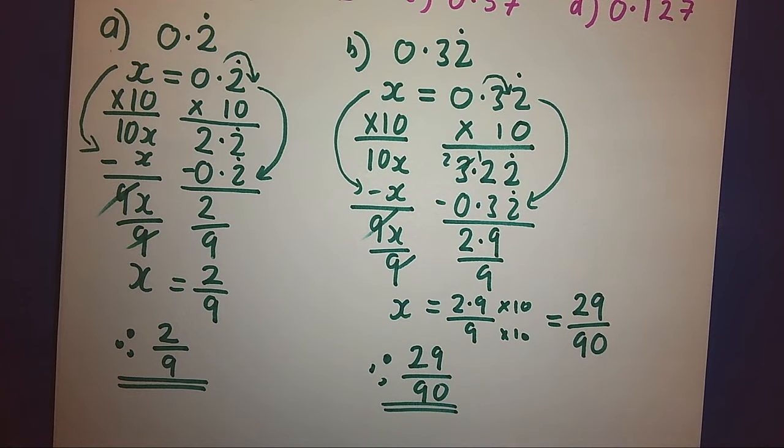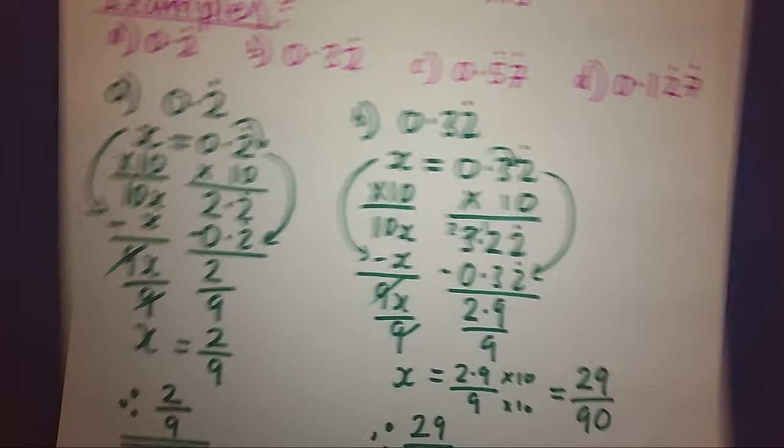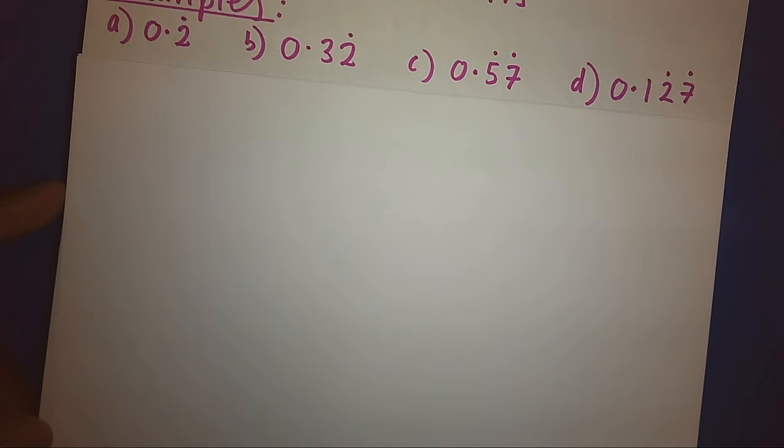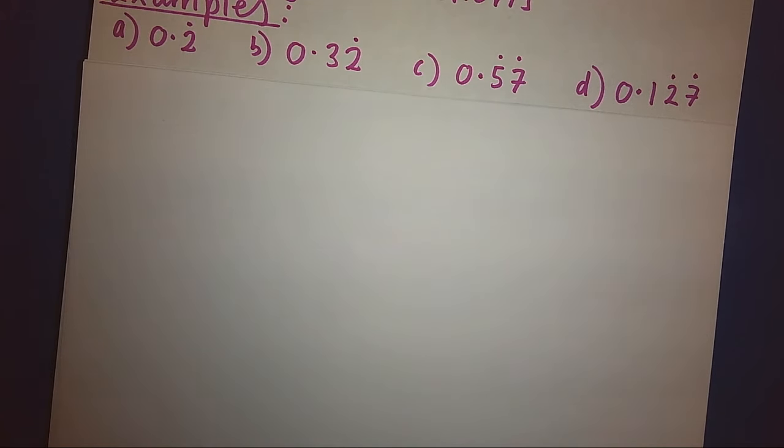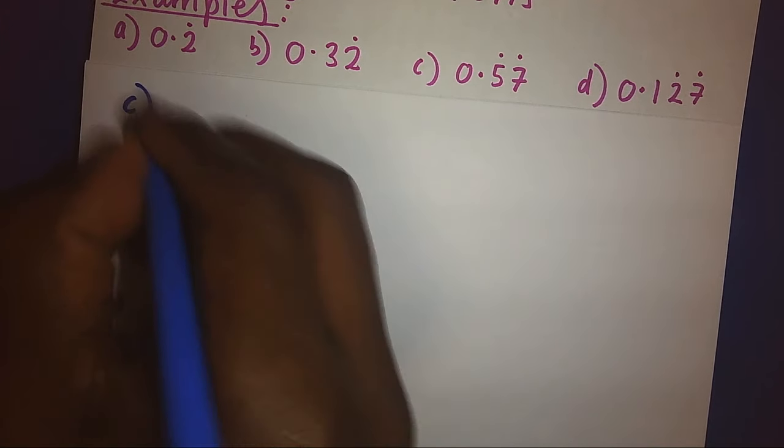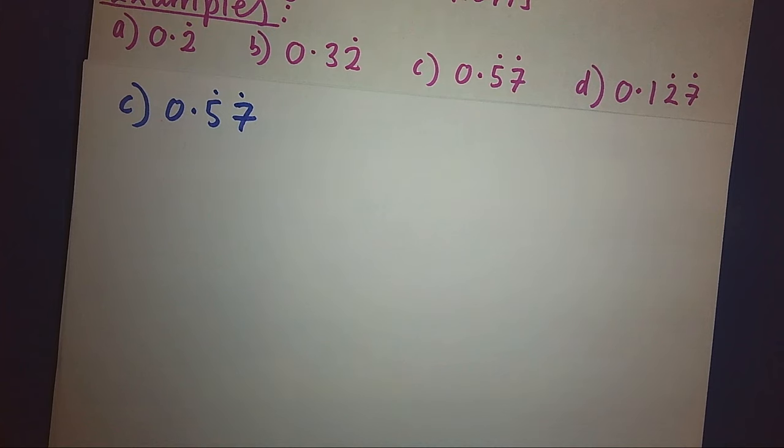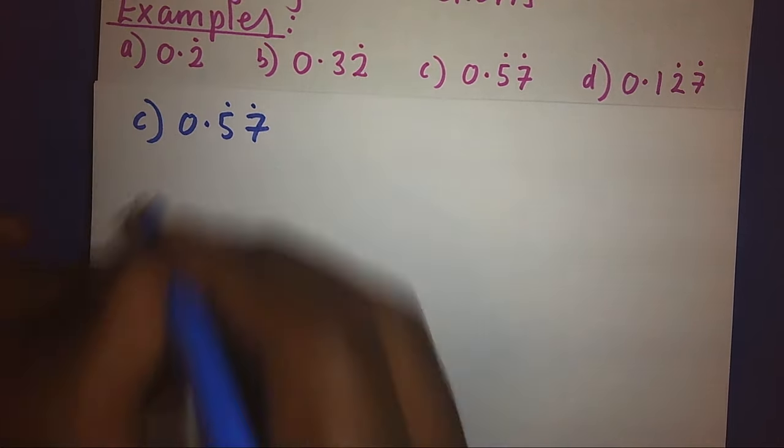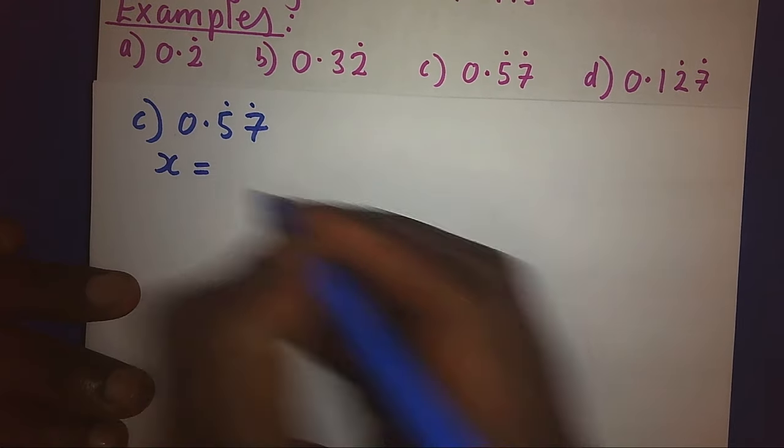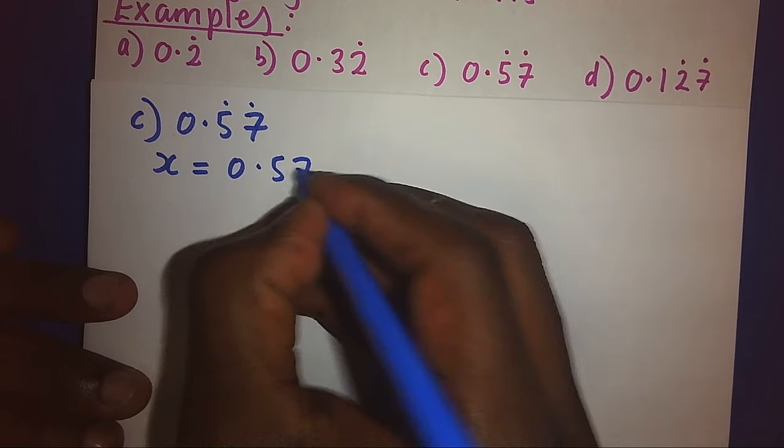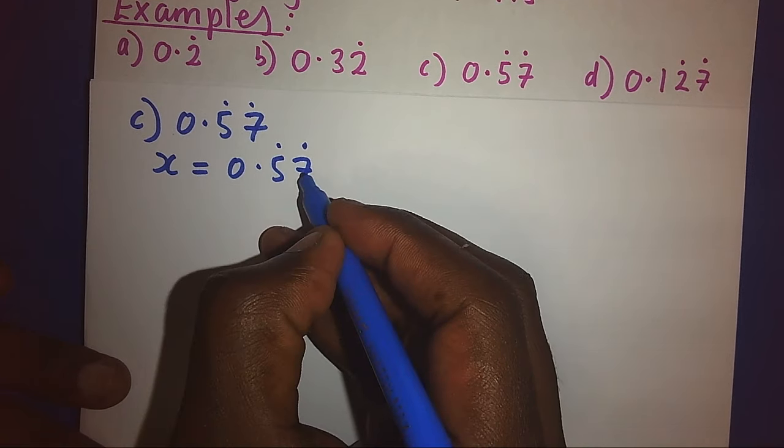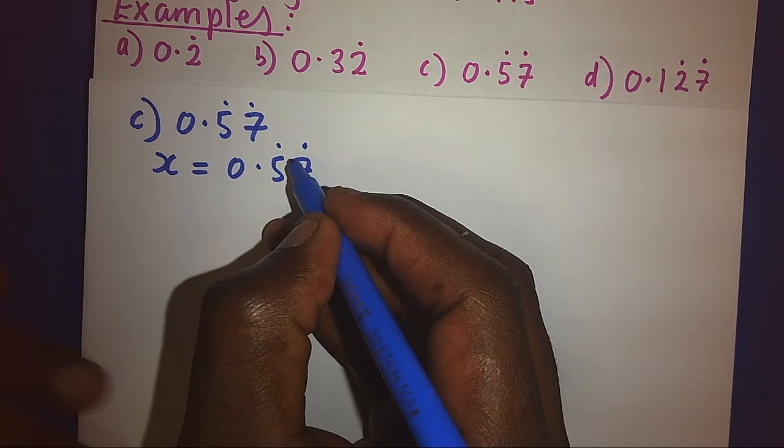Let's look at our third example, C. When you look at C, the recurring decimal is 0.57. Now, if you look properly, two numbers are recurring now. So when we let x equal to 0.57, and we see 5 and 7, both of them are recurring. Now, because two numbers are recurring, we shall multiply by 100.